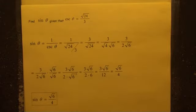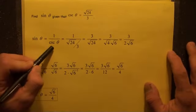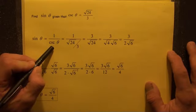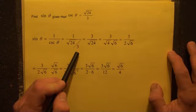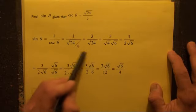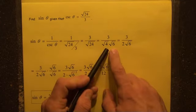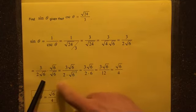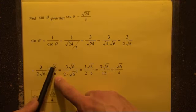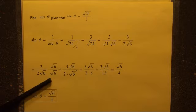Next one. Find sine theta, given that cosecant theta is root 24 over three. Well, sine equals one over cosecant. Therefore, we can say one over root 24-thirds. Then we can rewrite this as a fraction three over root 24. Simplify the radical. So three over two root six. Then we're trying to get rid of this root six by multiplying by root six over root six. If you don't understand this, head over to the simplifying radicals video.